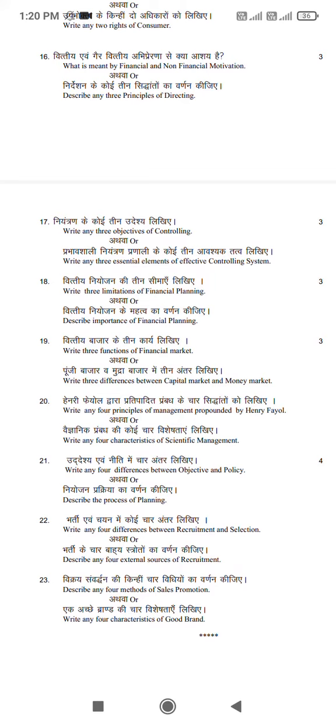Q17: Write three objectives of controlling, or describe 3 essential elements of an effective controlling system.